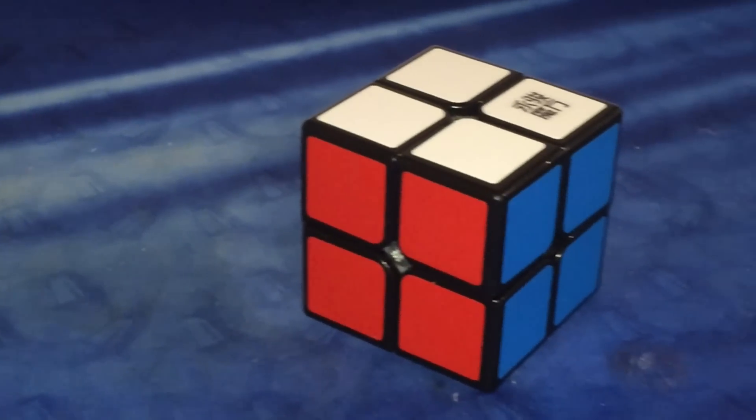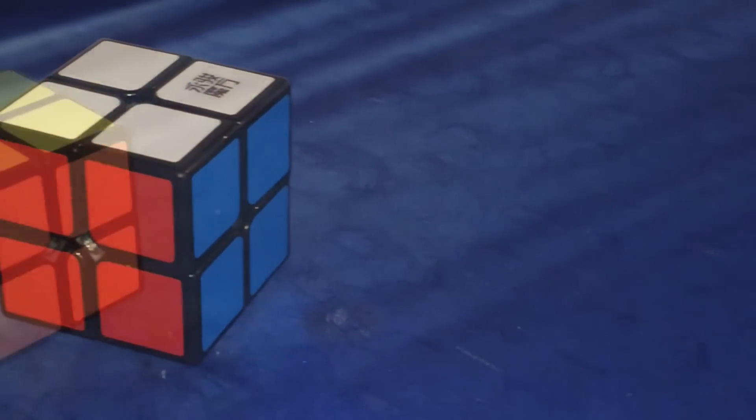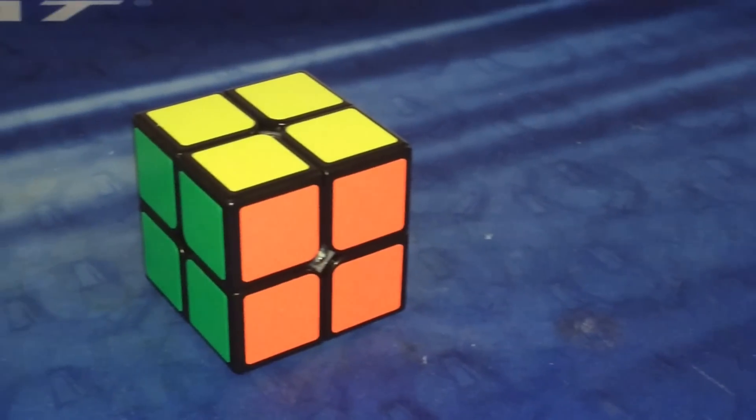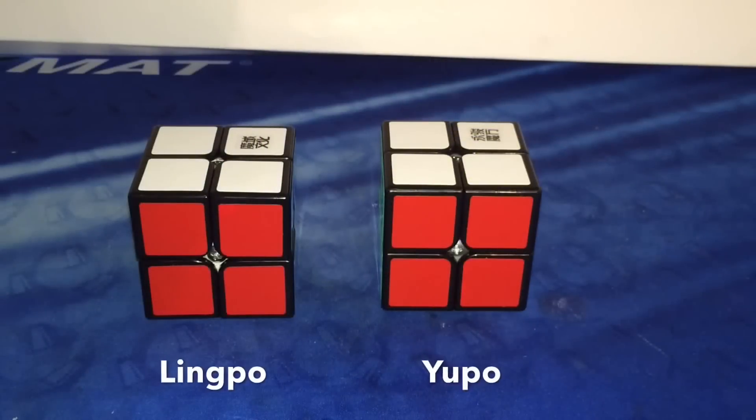The YJ Yupo 2x2 is a new 2x2 from YJ. It's supposed to be a cheaper version of the Ling Po. Speaking of the Ling Po, they look very similar.